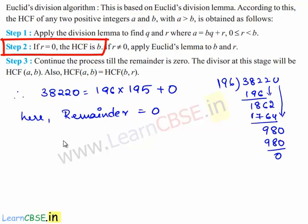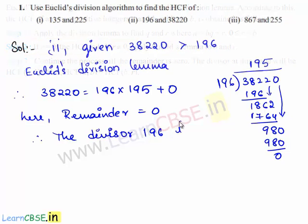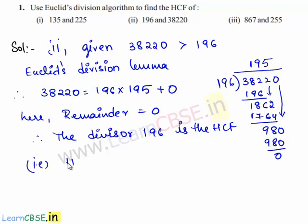Since the remainder is equal to 0, the divisor 196 is the HCF. That is, the HCF of 38,220 and 196 is equal to 196.